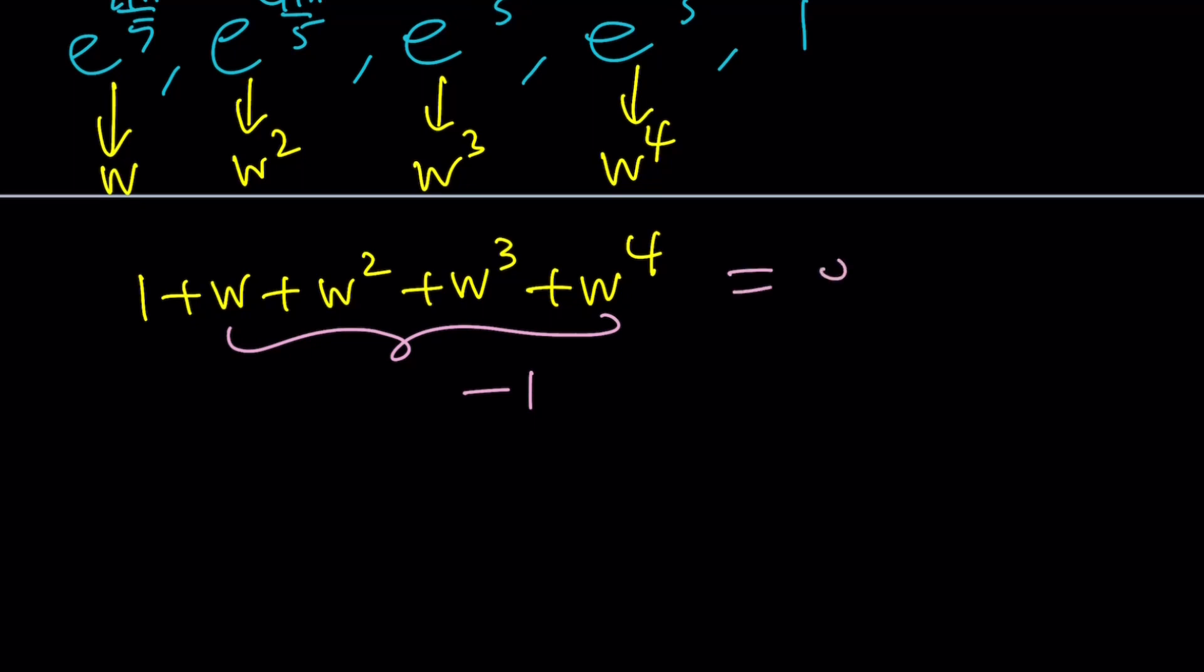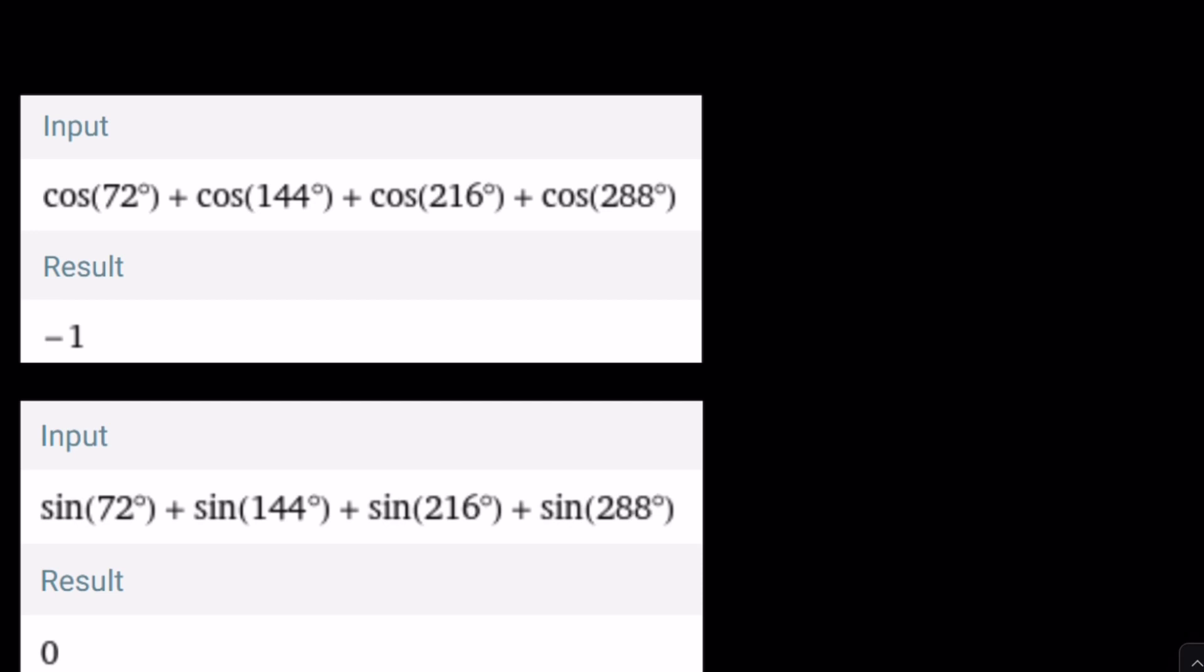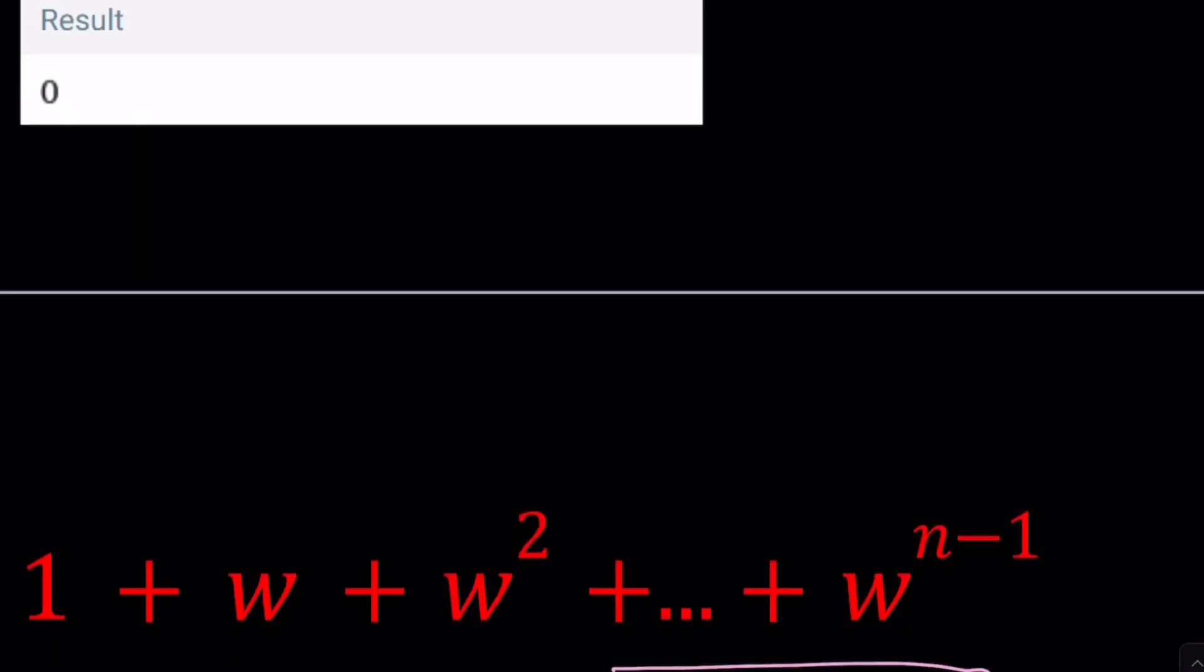But we're looking for w + w² + w³ + w⁴. Okay. So this is one way to look at it, obviously, instead of evaluating all these values. Another way to look at it would be the following. Look it up, right? Of course. It's not the best method, but at least you do have a calculator that you can use. Okay? So here's another way to approach it, actually.